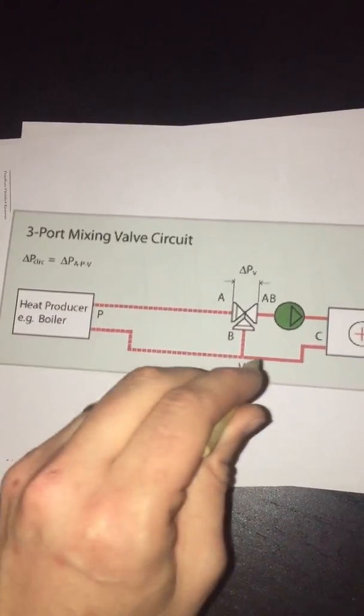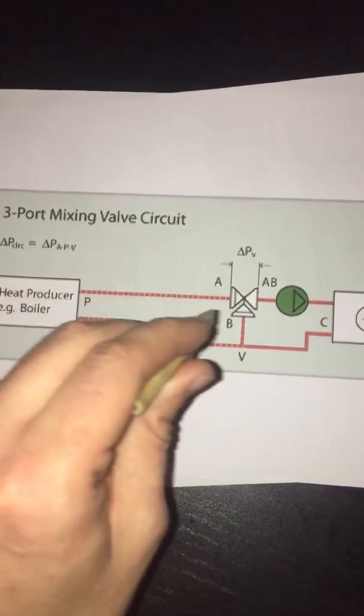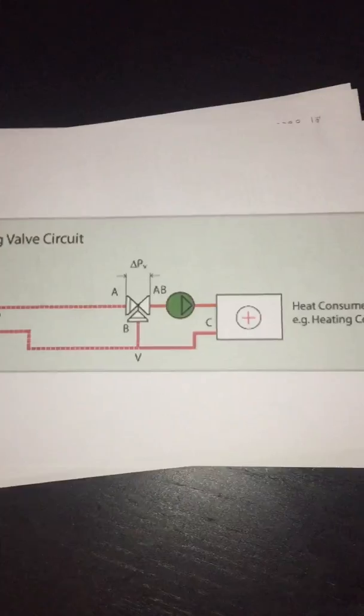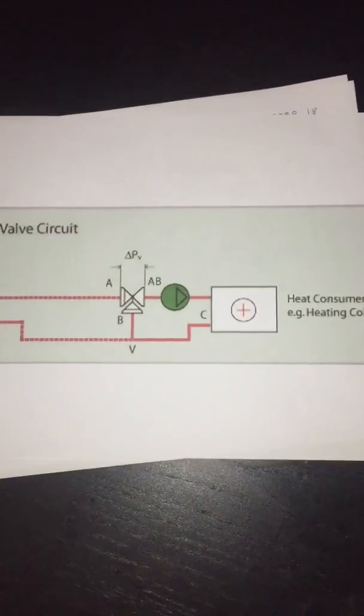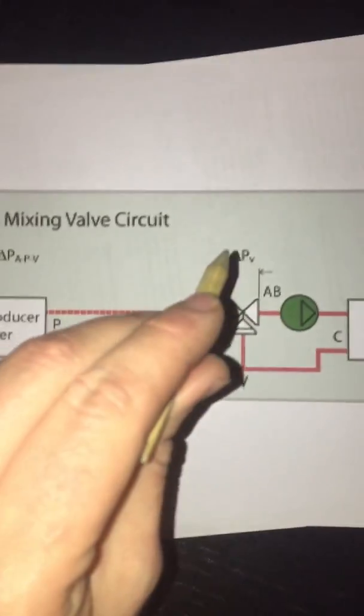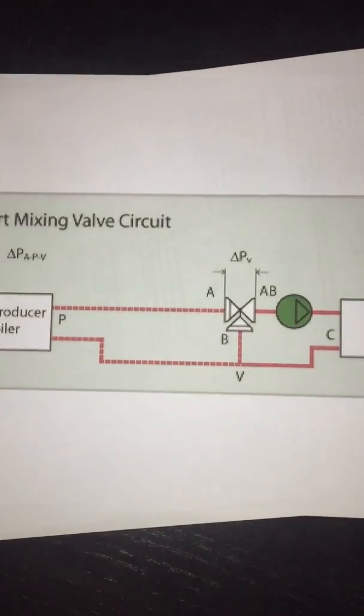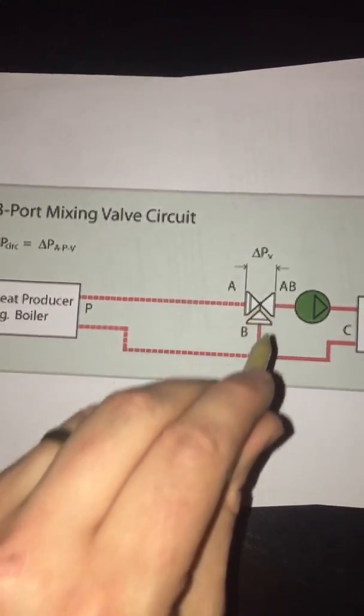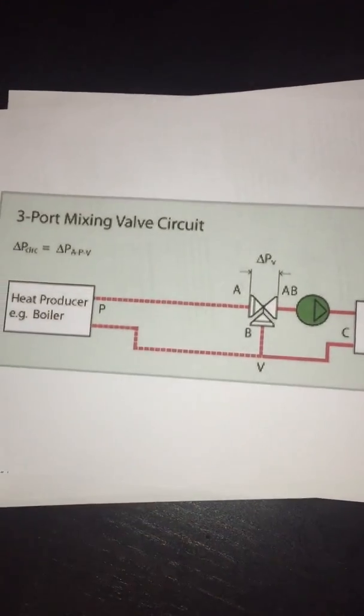So we have our flow from our boiler and our return from the boiler. It's blending down to give reduced flow temperature, say, to often an underfloor heating circuit here. So the delta P across this valve wants to be between 20 and 50% roughly of the delta P across the entire circuit including the valve.